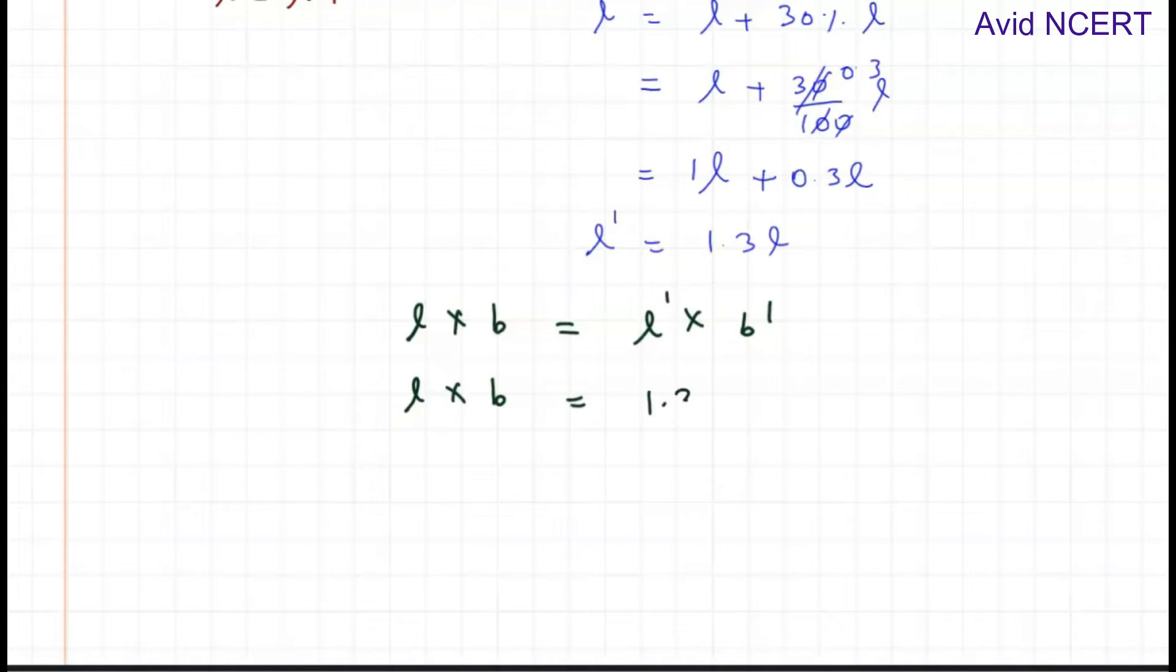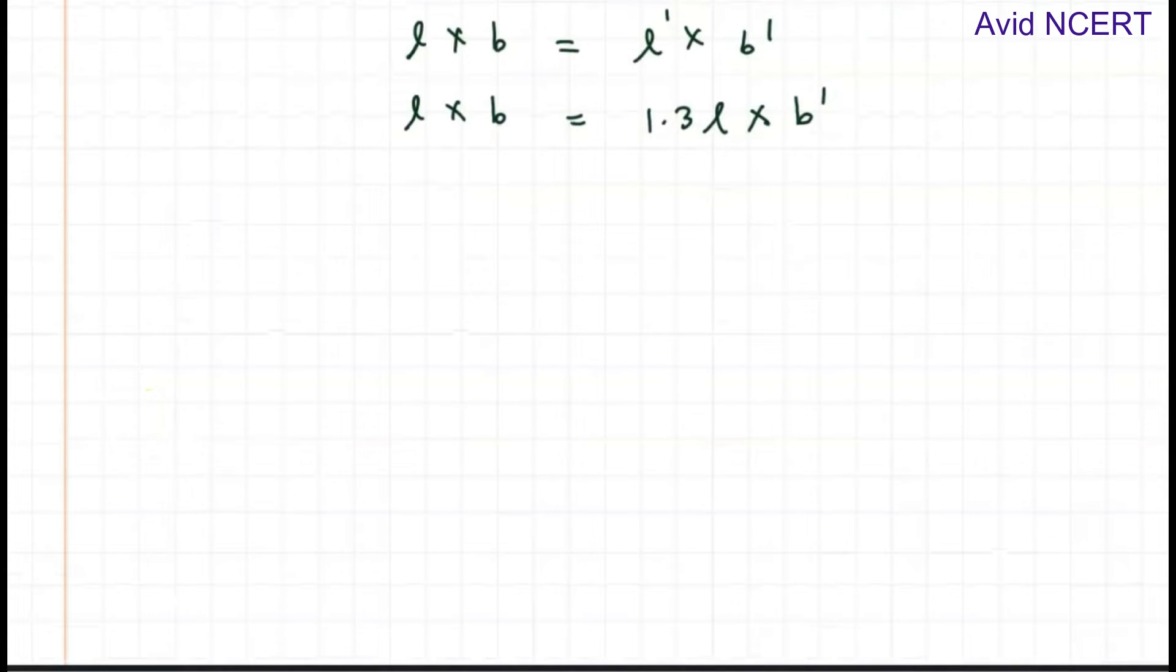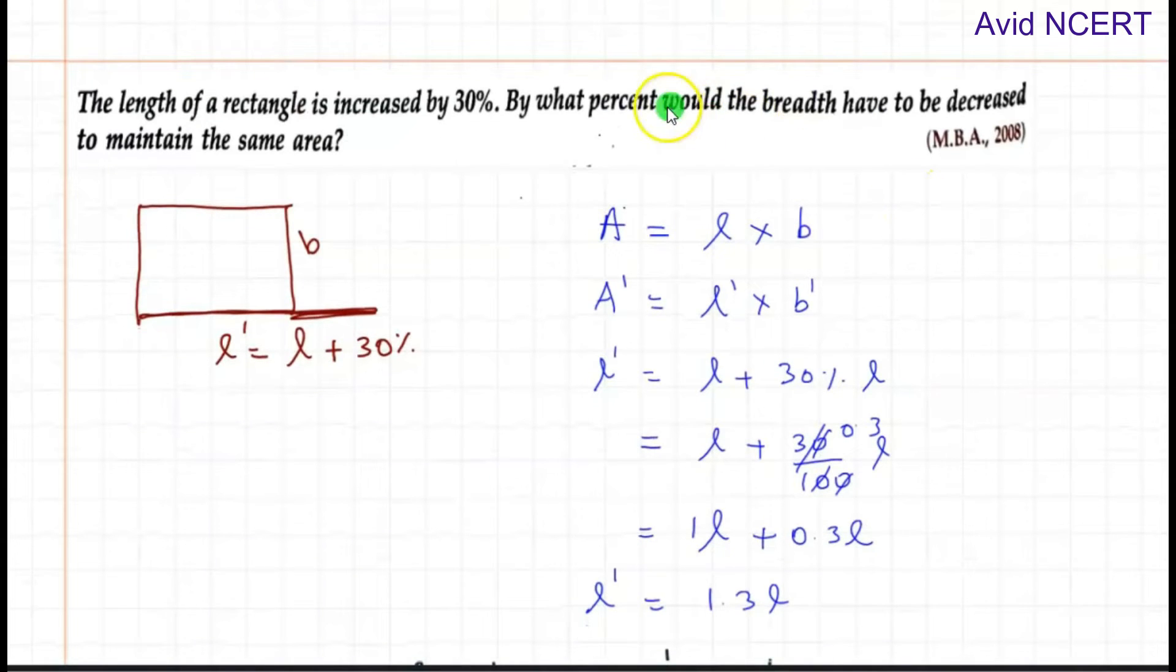Grouping l and b together, b dash equals l times b divided by 1.3l. The 1.3l goes to the denominator. L gets cancelled, so b dash equals b/1.3. Now to find the percentage decrease: percentage decrease can be found by initial value minus new value divided by initial value times 100.